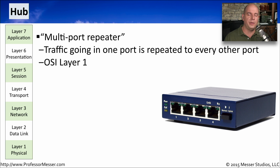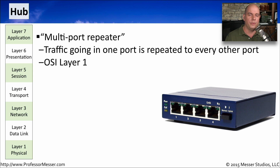One of the foundational components of networking is the ethernet hub. This hub is what we call a multi-port repeater, which means that any traffic going into one port on a hub is automatically sent to all of the other interfaces on that hub as well. So you can plug in anywhere and see all of the traffic traversing the network. We refer to this as an OSI Layer 1 device, since it's really taking the signal and forwarding it to every other port, regardless of what it happens to be.